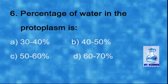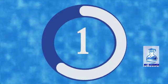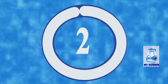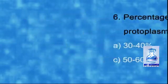Number six: the percentage of water in the protoplasm is — a) 30 to 40 percent, b) 40 to 50 percent, c) 50 to 60 percent, d) 60 to 70 percent. The correct option is d) 60 to 70 percent.